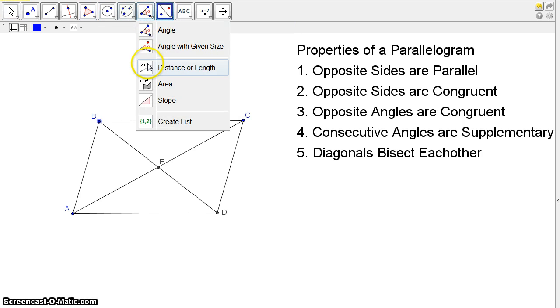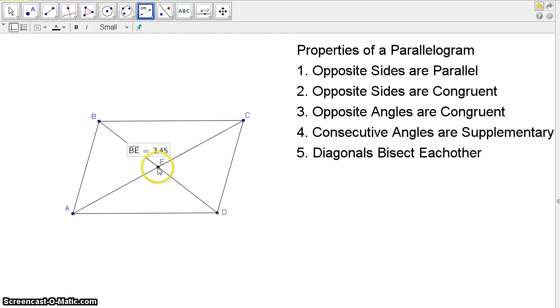So what I'm going to do is measure the length from B to E and then from E to D. Measure from A to E and E to C. Now those pieces are the same in my diagram. B to E, E to D are bisected. They're equal to each other. E to C, A to E are equal. That diagonal is bisected.